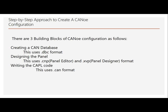Now let's discuss the step-by-step approach to create the CANoe configuration. There are three building blocks: first is DBC creation (dot DBC file), which is used to create the messages for CANoe — we create messages and signals in the DBC. You can also download the demo version of DBC Configurator Plus DB Editor, and design tools like dot CNP for panel designer. CAPL scripting is used to write CAPL code for event-based frames.